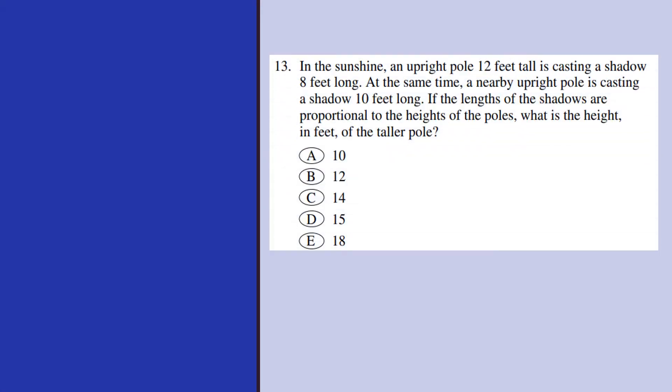The question here is about an upright pole 12 feet tall casting a shadow of 8 feet long. So 12 feet is an upright pole's height and 8 feet is the shadow. At the same time, a nearby upright pole is casting a shadow of 10 feet long. We do not know what is the height. Since these two are similar triangles, I can make use of the similar triangle properties.